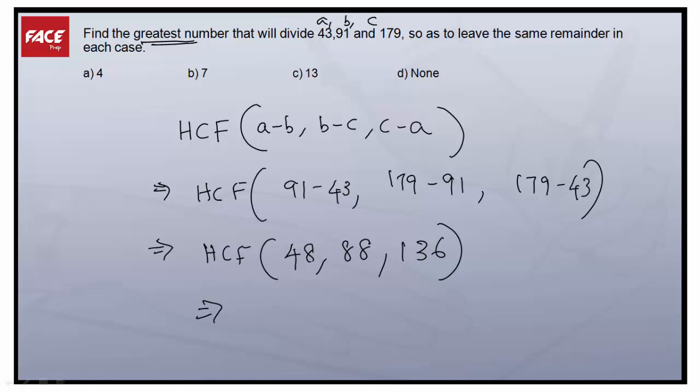Basically there is 88, so let's check for 8 tables. Yes, this goes with 8, this goes with 8, and what about this? Yes, this also goes with 8. So the HCF of 48, 88, and 136 will be 8. Since there is no option as 8 here, the answer will be option D, None.